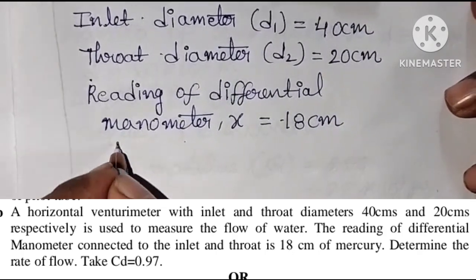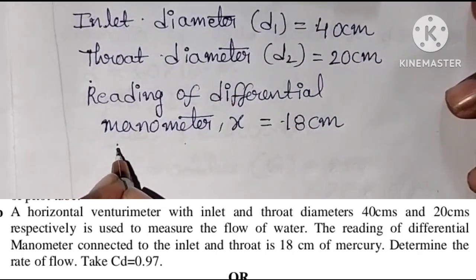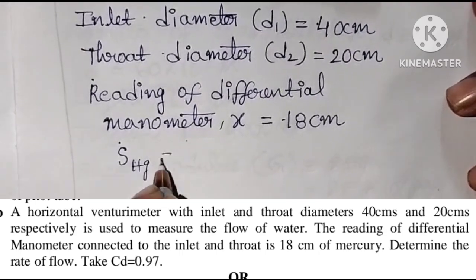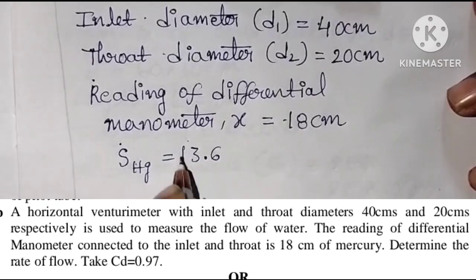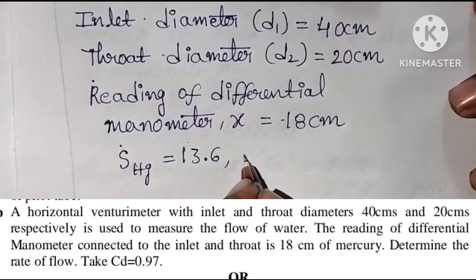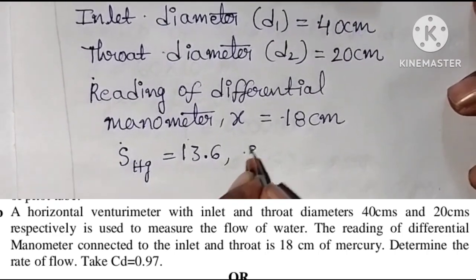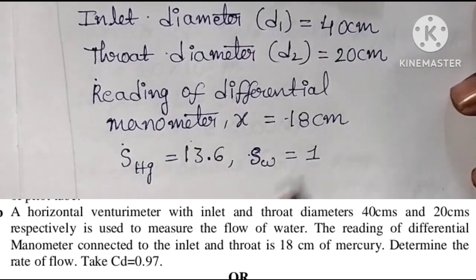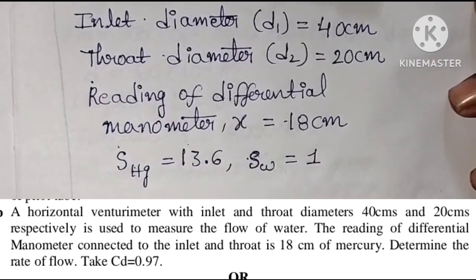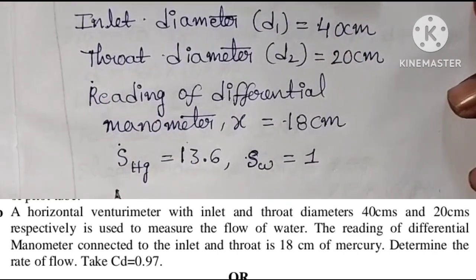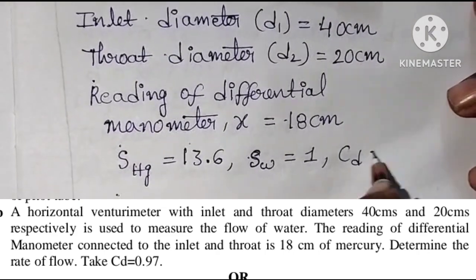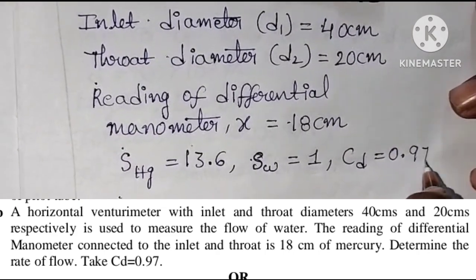We are using a heavy liquid, mercury, with a specific gravity of 13.6. Since we are measuring the rate of flow of water, the specific gravity of water is 1. The coefficient of discharge CD is given as 0.97.